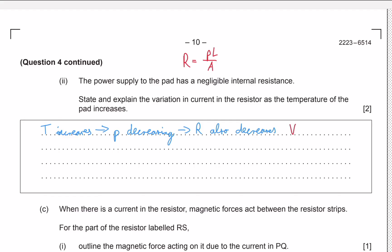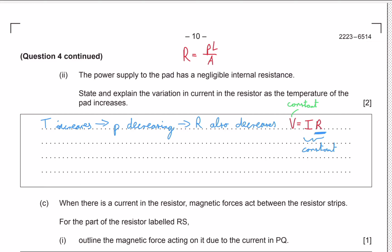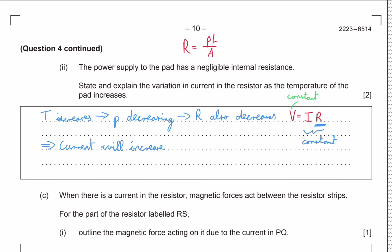Using V = IR, the voltage is constant because the source doesn't change — the potential across the heating element remains the same. So if resistance decreases and the product of current and resistance must remain constant, the current must increase. Therefore, as temperature increases, the current in the resistor increases.